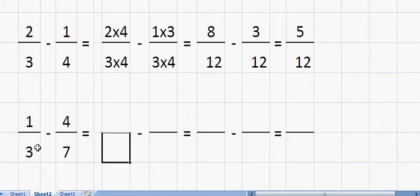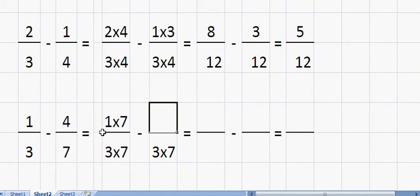So first of all, on the bottom, we multiply the two bottom numbers. That's going to be three by seven. The bottom here, it's going to be three by seven. On the top here, it's going to be one by seven. The top number there multiplied by the bottom there. And then on the top here, it's going to be this number multiplied by this. So that's going to be four by three.